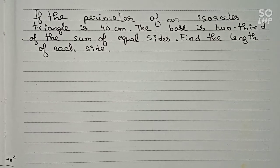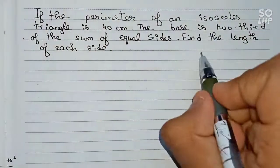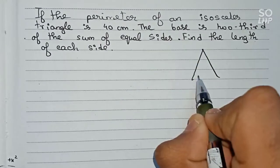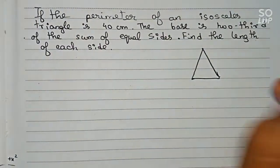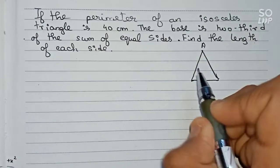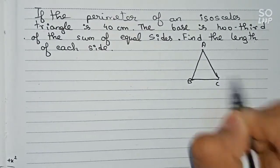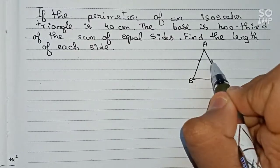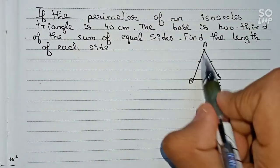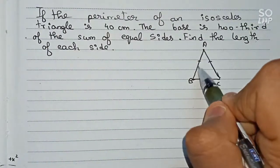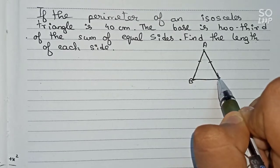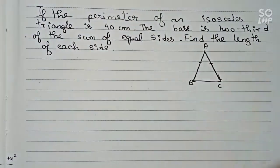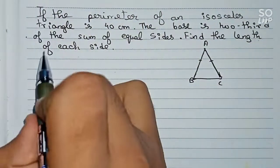I have solved this. First, let's draw the isosceles triangle. Let this be our triangle — we name it A, B, and C. An isosceles triangle means two sides are equal, so let AB and AC be equal. It is also given that the base is two-thirds of the sum of the equal sides.